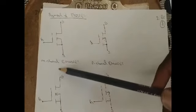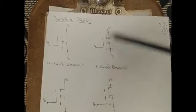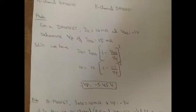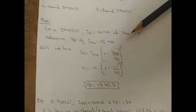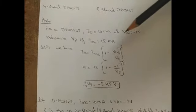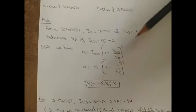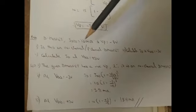For MOSFET symbols: if the flow direction of electrons is inward (inside), it is an N-channel MOSFET; if the flow direction is outward, it is a P-channel MOSFET. If flow is toward the gate, it is N-channel; if away from the gate terminal, it is P-channel. Now we will solve some problems for D-MOSFET.